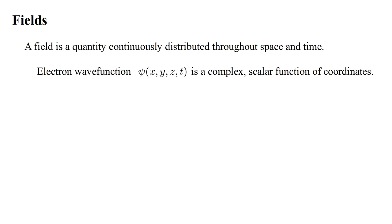The Electron Wave Function of Quantum Mechanics is one example of a field. Complex means that its values consist of complex numbers, having both real and imaginary parts. Scalar means that the field has only an amplitude.